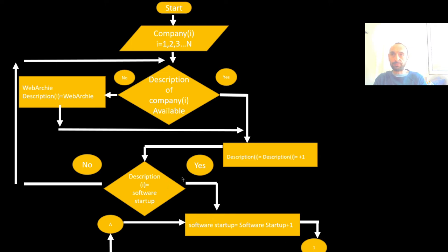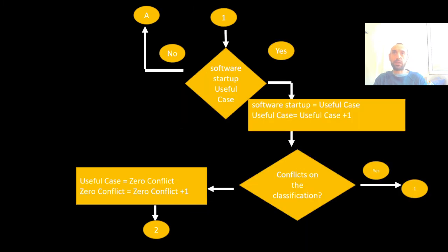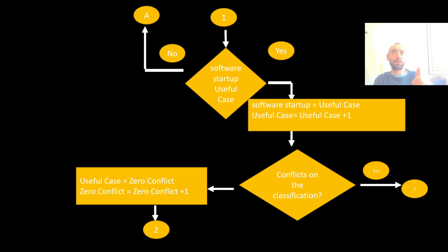I made a correction to the diagram — the loop-back arrow should point to step one here. We then take the next software startup, the next entry in the matrix row. Now, once the algorithm identifies a software startup as a useful case, we check whether there is a conflict in its classification.